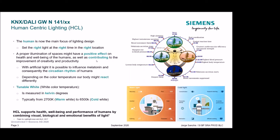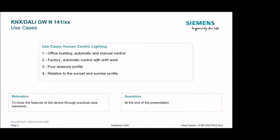This is what you can do with our KNX-DALI Gateway from Siemens. I will show you four use cases: one in an office building, one in a factory, and two related to the position of the sun or the location of the building. The motivation is that you know the features of our devices through these practical scenarios, and at the end there will be time to ask questions.